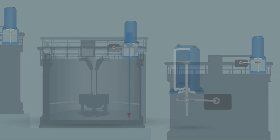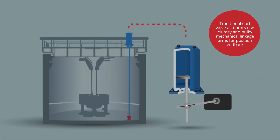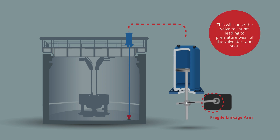Traditional dart valve actuators use clumsy and bulky mechanical linkage arms for position feedback. These fragile linkage arms are prone to backlash, leading to unstable position control. This will cause the valve to hunt, leading to premature wear of the valve dart and seat.